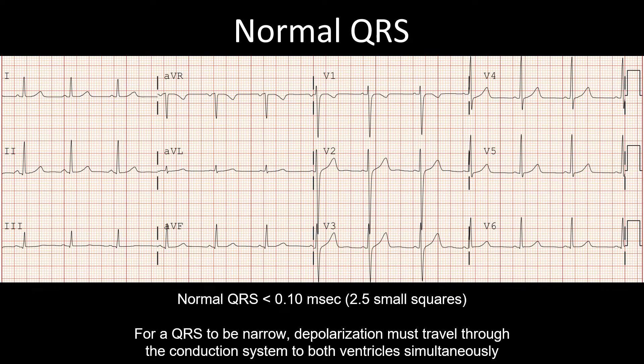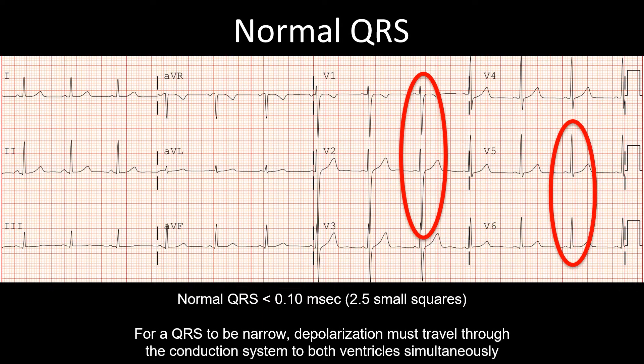Under normal circumstances, depolarization proceeds from the AV node through the His-Purkinje system through the right and left bundles simultaneously to depolarize both ventricles, generating a narrow QRS complex. As we discussed in a prior lecture, there's a small r and a deep s in lead V1 and a small q and a large r in lead V6, with a transition from V1 to V6 where the r gets larger and the s wave gets smaller.